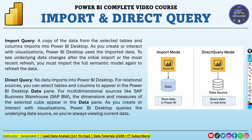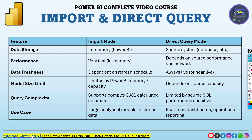Now, import and direct query both have their own advantages and disadvantages. Looking at the differences: data storage — in import mode, data is stored inside Power BI memory; in direct query, data stays at the source database. Performance — import mode is very fast because data is stored in Power BI memory and queries go directly to that in-memory table. In direct query mode, performance depends on how fast your database is, since two tools are in play: Power BI and your underlying database.